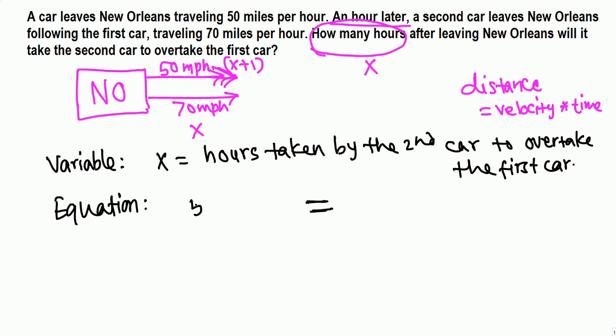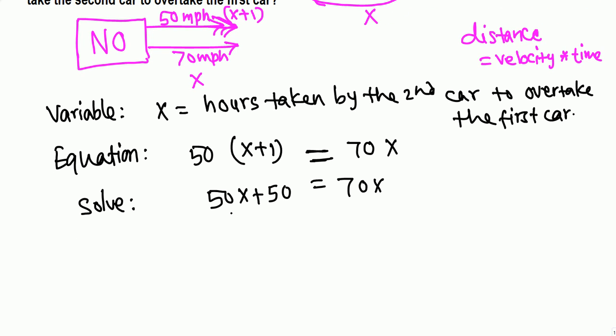Now we want to solve this equation. So distribute 50, you get 50x + 50 equals 70x. And we want to isolate x, so let's subtract 50x from both sides.